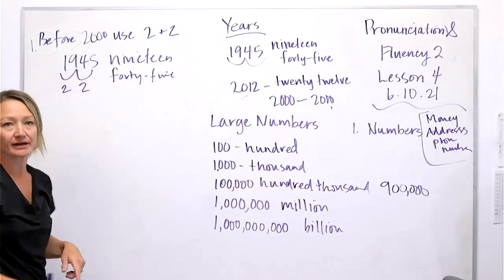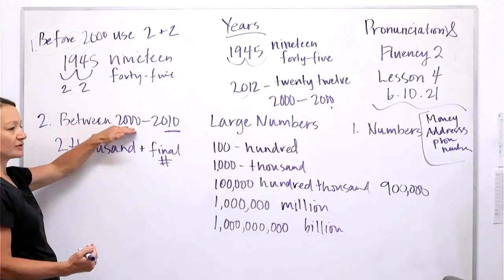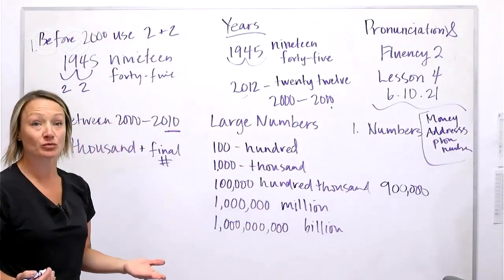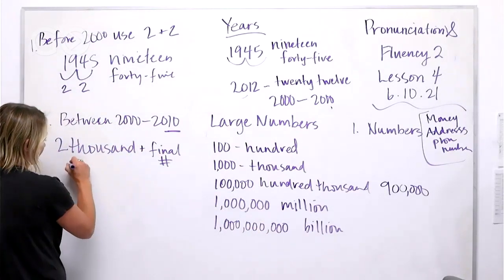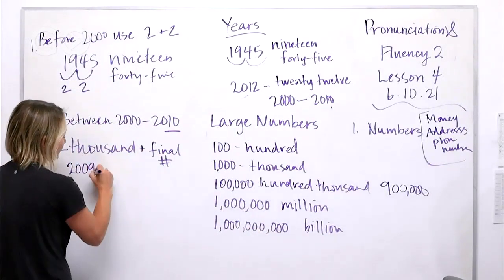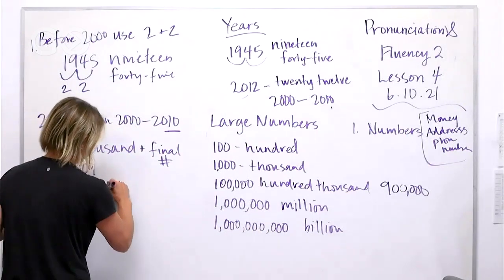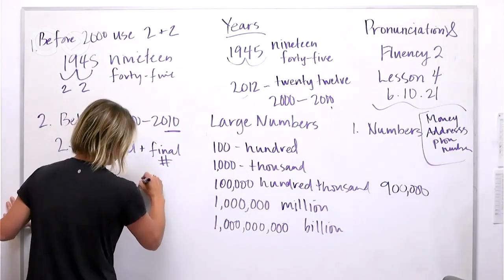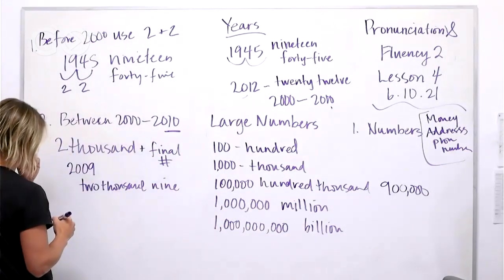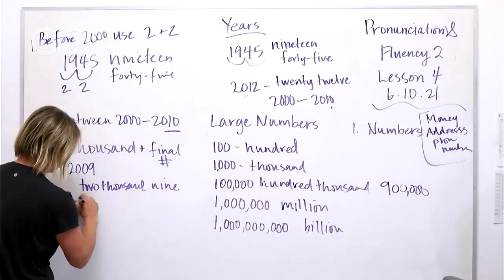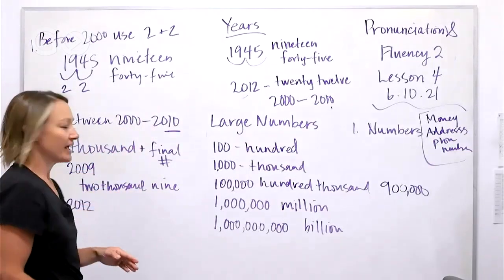The rule between 2000 and 2010 is to say '2000 and' then the final two numbers. So 2009 would be 'two thousand and nine.' 2012 — this rule can go up to around 2017 or so.